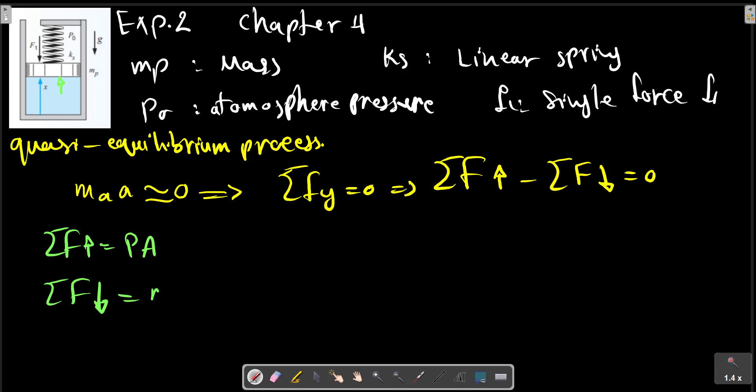So we have sigma F equals mp·g plus P0·A, and F1 and external forces, and a force due to the spring, which assuming X0 is the free length of the spring.